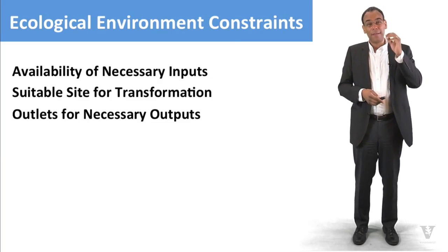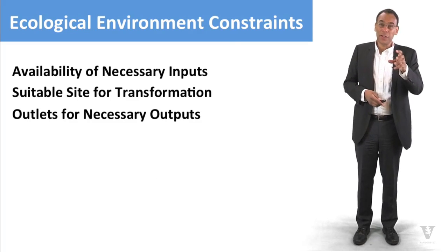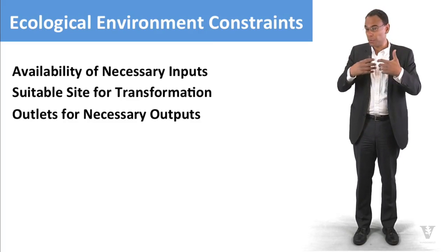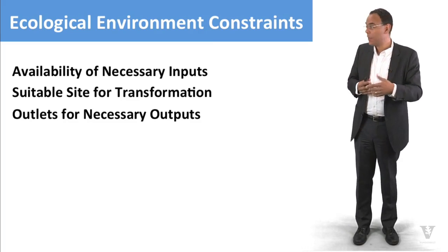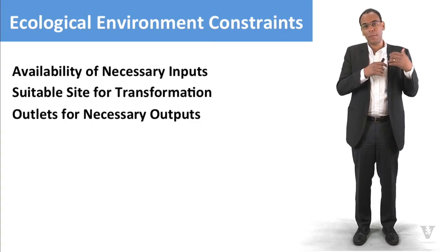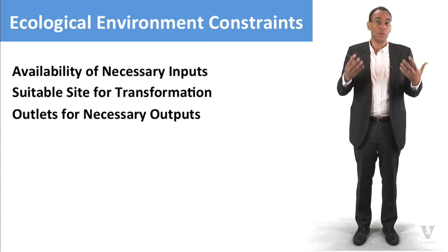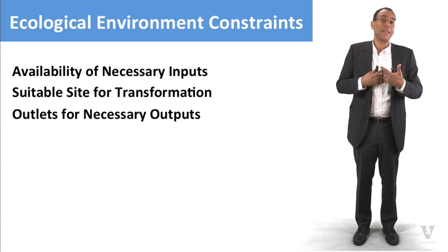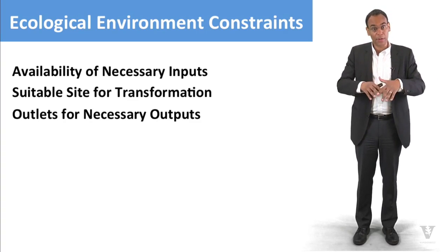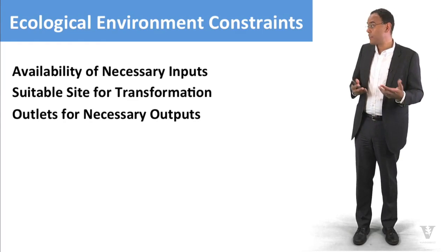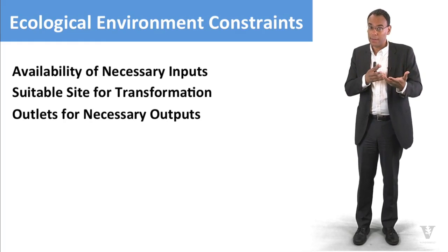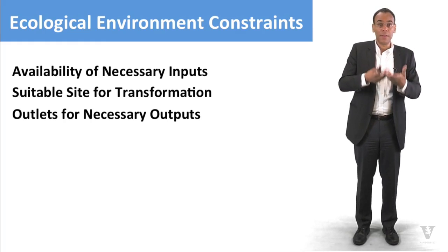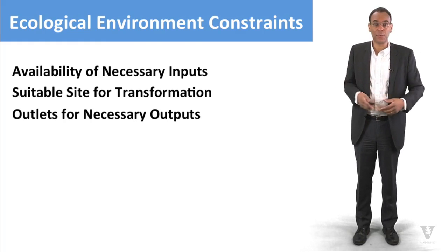We're talking about three sub-constraints: first, the availability of necessary inputs — where do we get the inputs that help us make the transformations we need? Second, the suitable site for transformation. And third, when a system has outputs, where do those outputs go? Some outputs are the intended products, but there are also byproducts — and what happens with those?